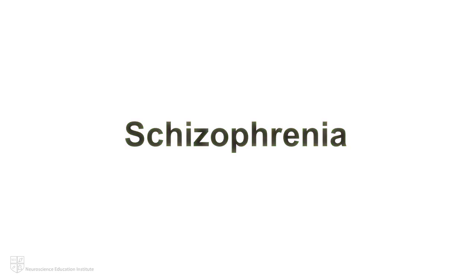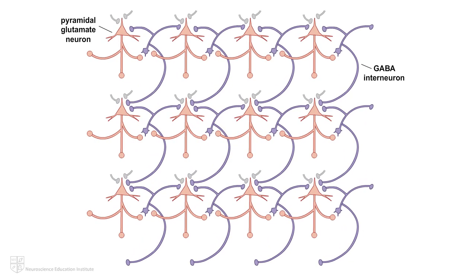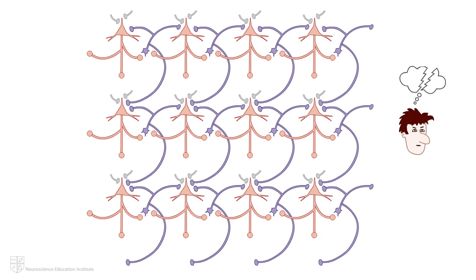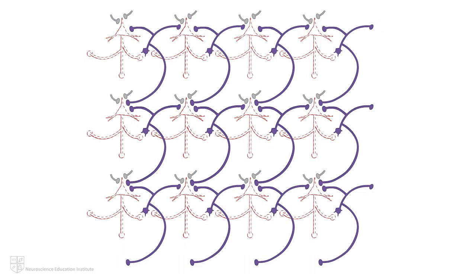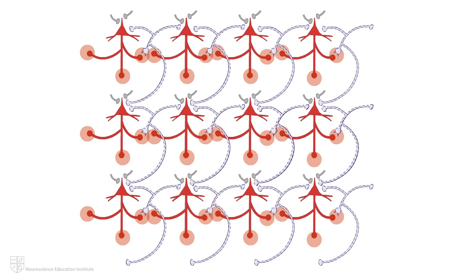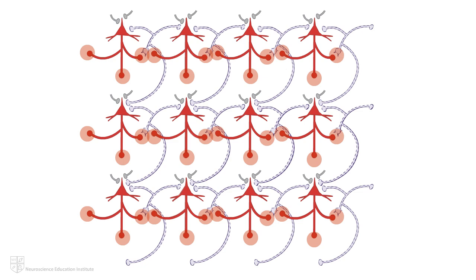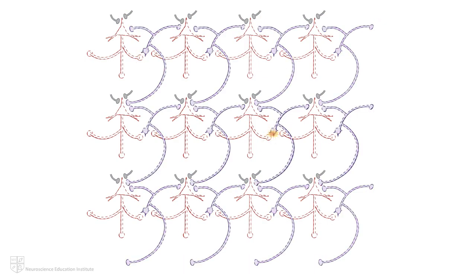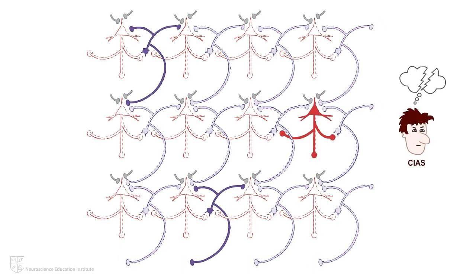Advances in our understanding of schizophrenia have led to the idea that schizophrenia is ultimately a neurodevelopmental disorder involving dysfunctional cortical networks that impact a wide range of circuits leading to the symptoms of schizophrenia, including cognitive impairment. In healthy individuals, the cortical network of glutamatergic pyramidal neurons fire in sync, and this synchronized firing is believed to underlie cognitive functions such as working memory and sensory processing. In schizophrenia, this cortical network fires asynchronously, leading to cognitive impairment associated with schizophrenia, or CIAS.